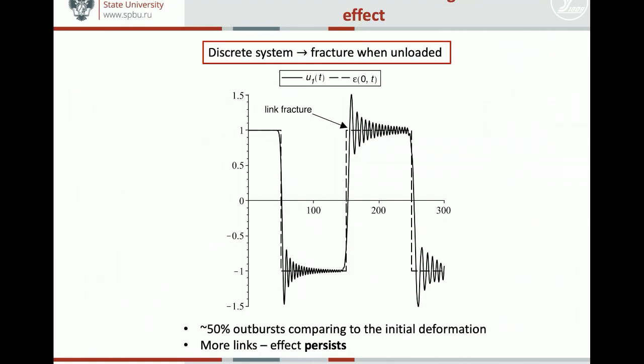And if we build the solution for the deformation of the first link, which is linked to the wall, we see that the release wave may cause fracture of this link. While in the rod, the continuous analog of the discrete chain, there is no fracture at all. So we see that in a continuous problem, in a continuous formulation, there is no fracture. But in a system with discreteness, there is evidently fracture.